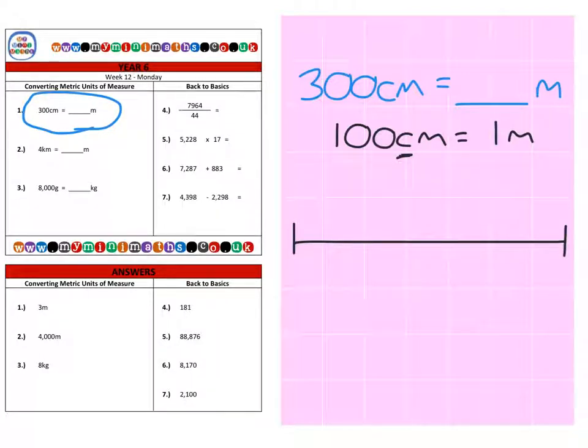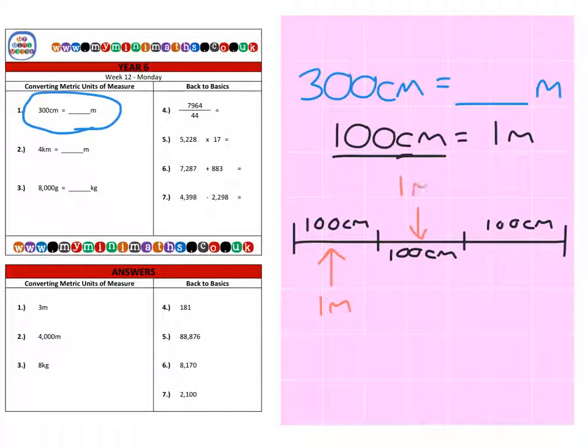If I take my 300 centimeters and split that into 100 centimeter sections or groups - 100 centimeters here, 100 centimeters here, and 100 centimeters here - here is my 300 centimeters altogether. We can clearly see that this 100 centimeters is 1 meter, this 100 centimeters is another meter, and finally this 100 centimeters here is 1 meter, so we have a final answer of 3 meters.